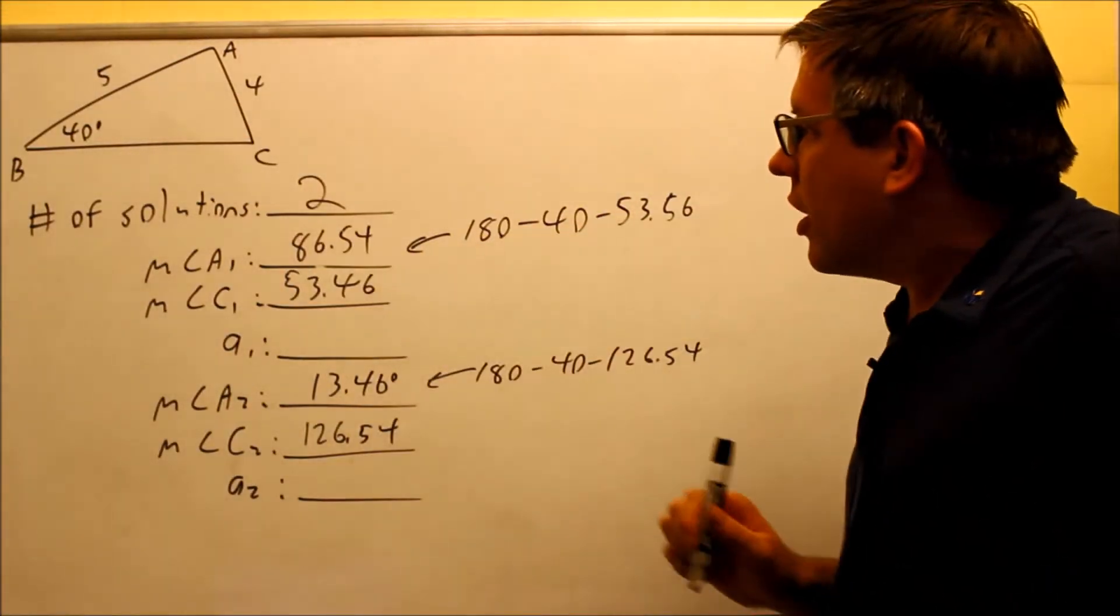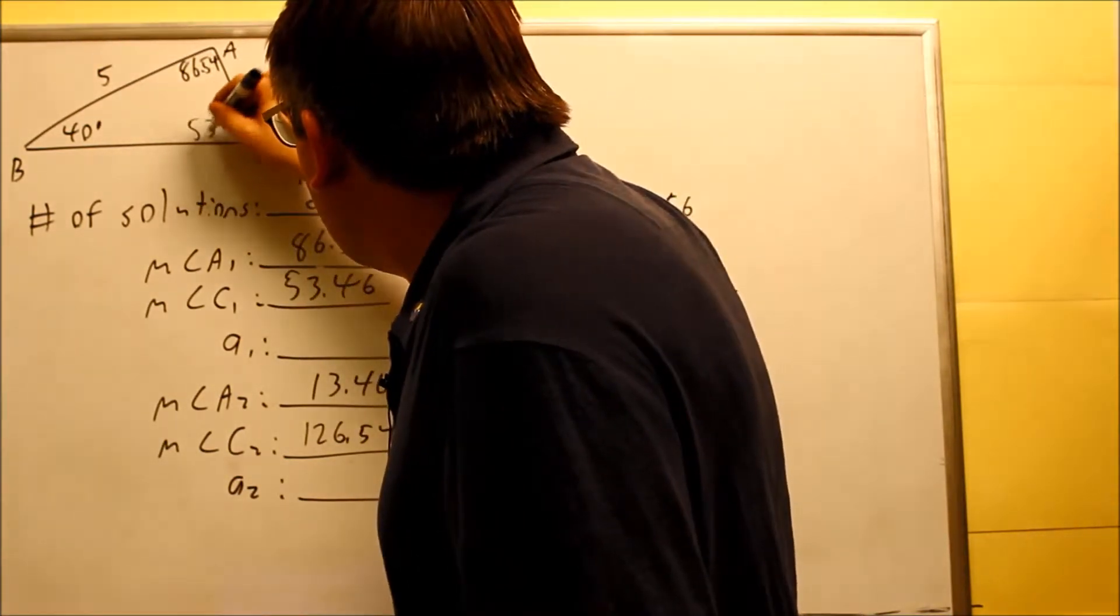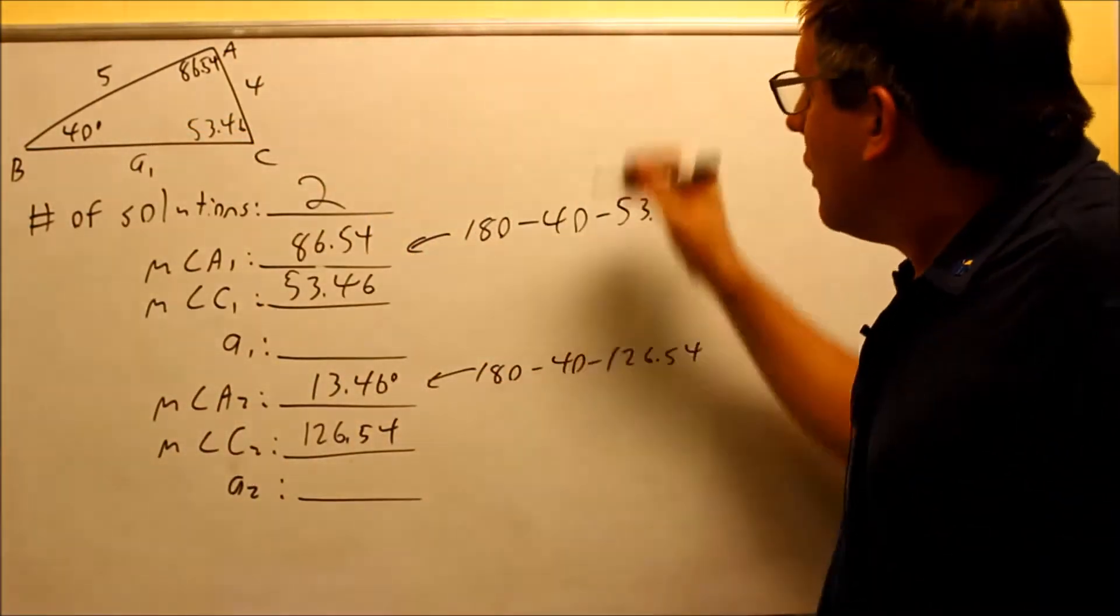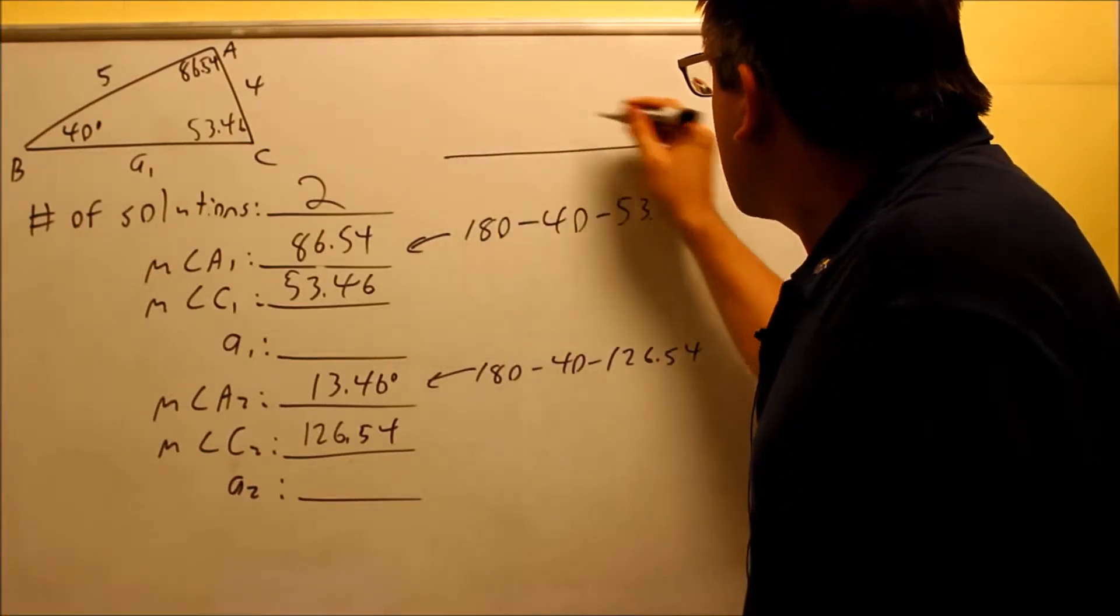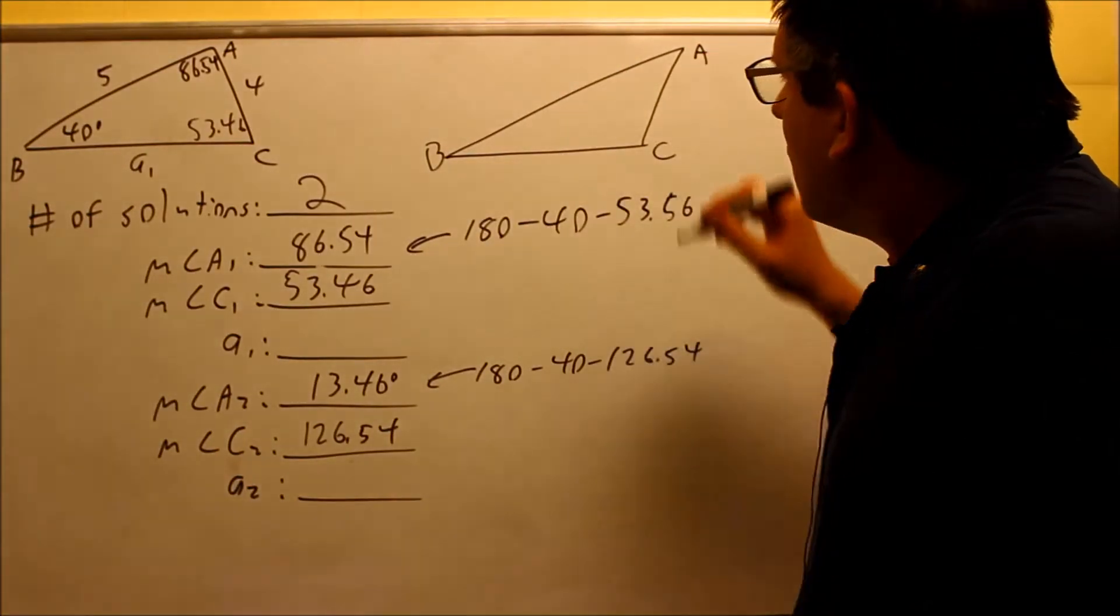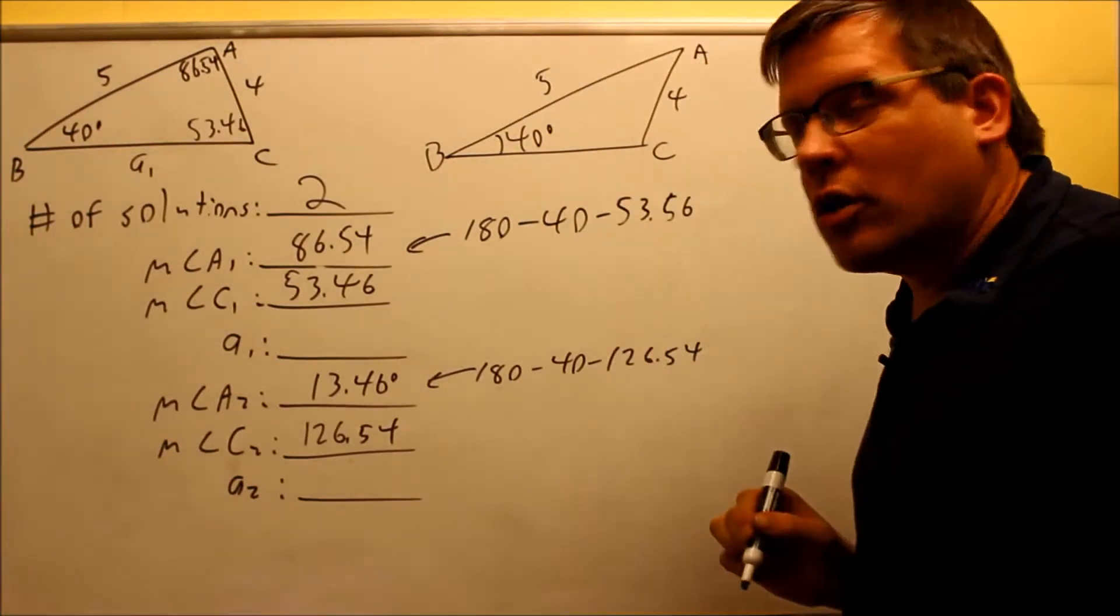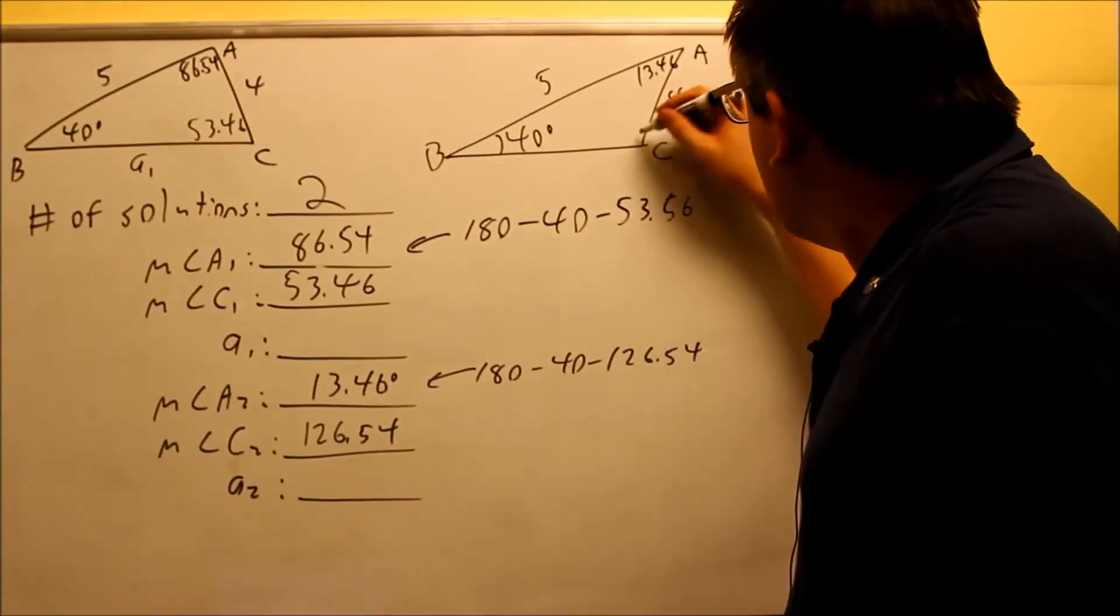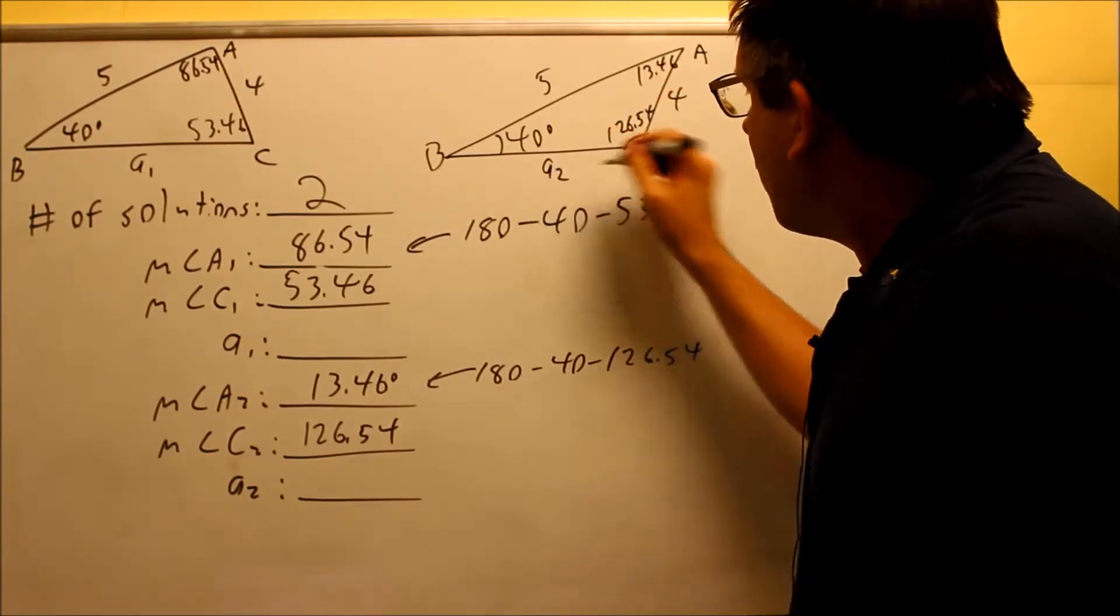Here's one triangle we have with A at 86.54 and C at 53.46. Now I'm going to redraw the second triangle. You don't have to do this, but I'm showing you visually what's actually happening here. I still have B, C, and A, and this is still 40 degrees, this is still 5, and this is still 4. A this time is 13.46, and C is 126.54. Now we're trying to solve for A2.